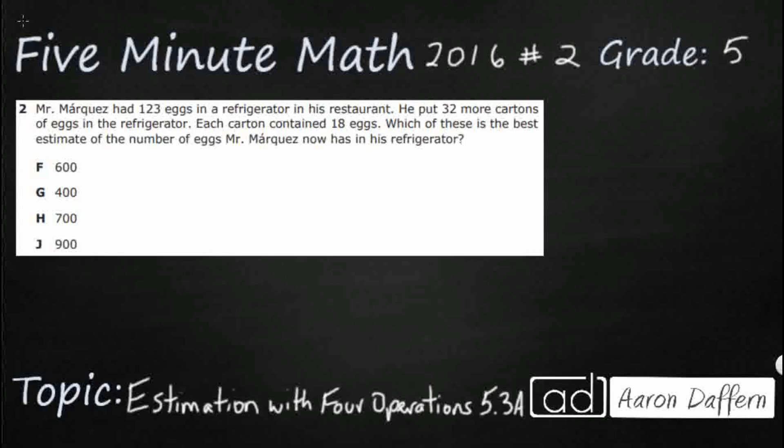So, Mr. Marquez has 123 eggs, so let me circle that, that's going to be important, and he put 32 more cartons of eggs in the refrigerator. Each carton contained 18 eggs. Which of these is the best estimate of the number of eggs Mr. Marquez now has in his refrigerator? All of our answers are rounded to the nearest hundred place.